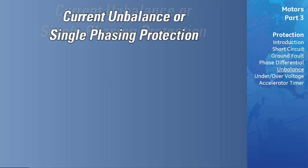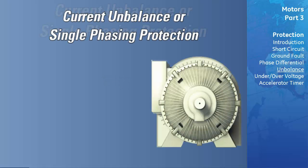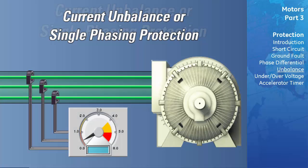Current unbalance or single phasing protection. The contribution of current unbalance to the thermal capacity used was covered earlier. Here, the magnitude of the current unbalance is used to detect and trip the motor if a single phase condition occurs. Single phase refers to the situation when one of the three phases is no longer being supplied to the motor. If enabled, a trip and/or alarm occurs once the unbalance magnitude exceeds the current unbalanced trip pickup for a period of time specified by the current unbalance alarm trip delay.